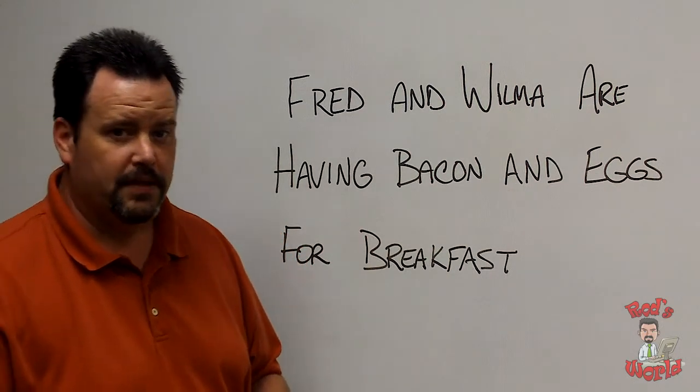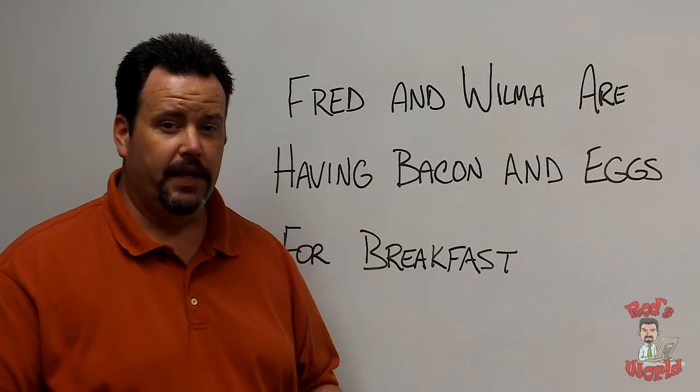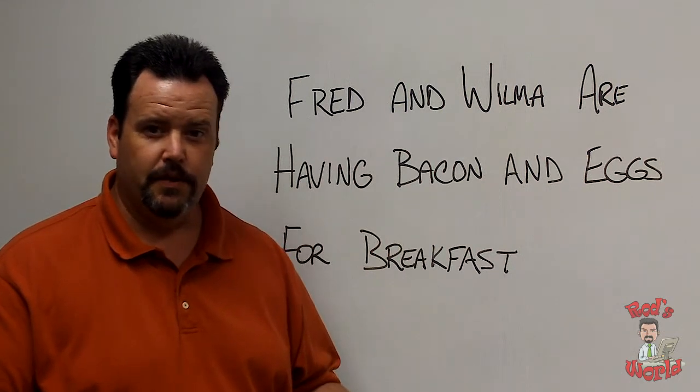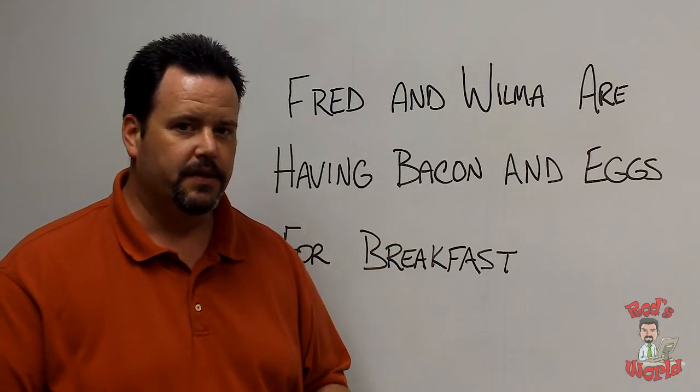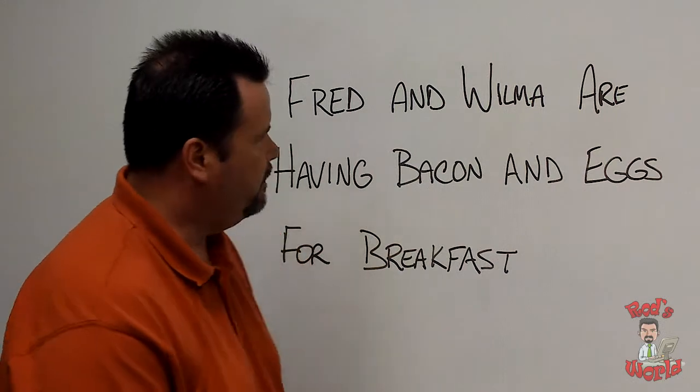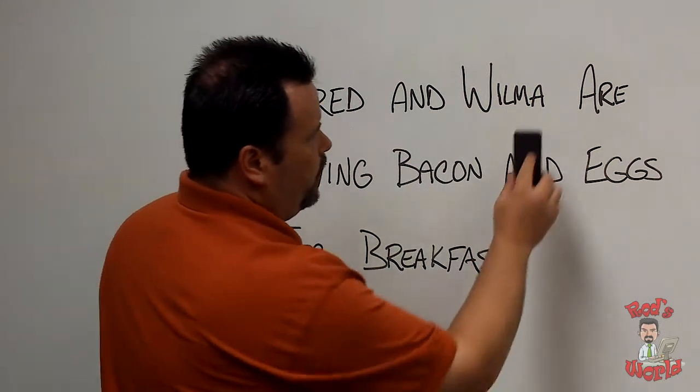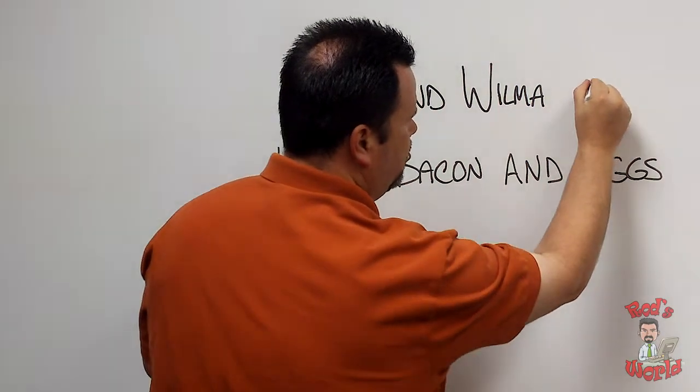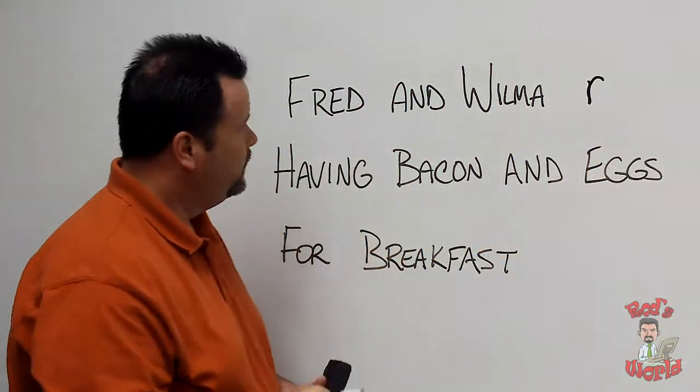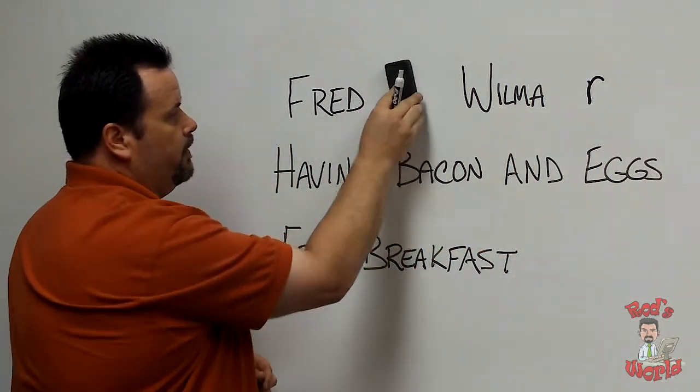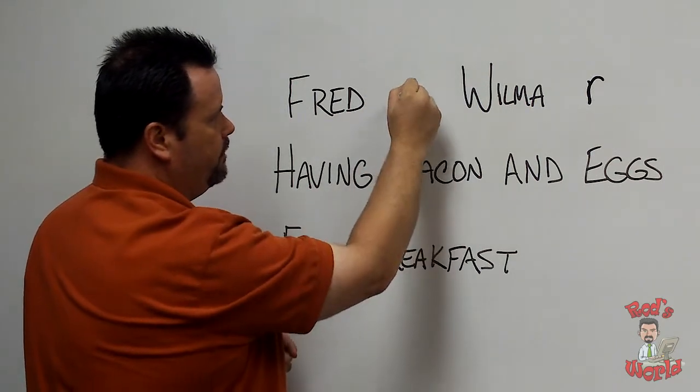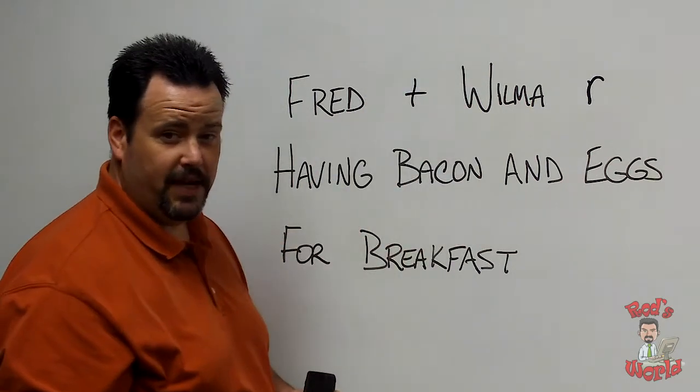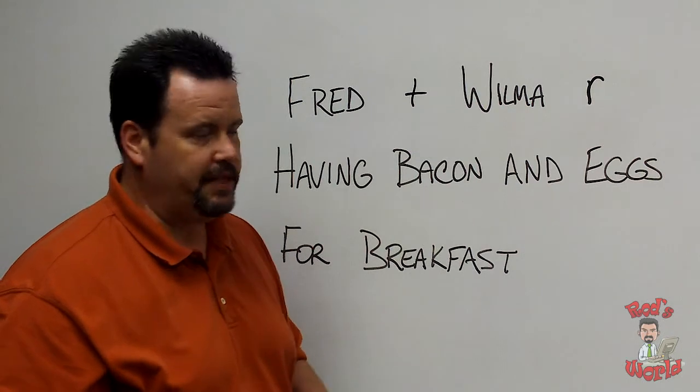The first step in this process is to take any words that can be replaced by a symbol or a number and replace those words. Let me show you what I'm talking about. Let's take the word are and replace that with the letter R. The word and, we'll replace that with a plus sign, ampersand, whatever is easier for you to remember.